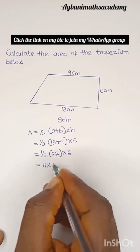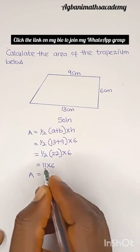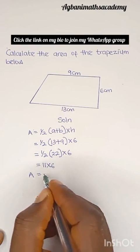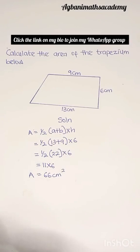Half of 22 is 11. So we have 11 multiplied by 6. This means our area of this trapezium is 11 multiplied by 6, which is 66 centimeter square.